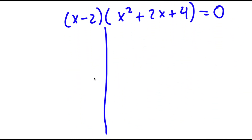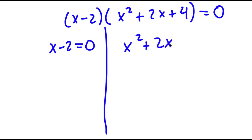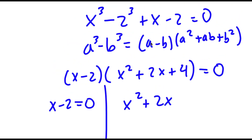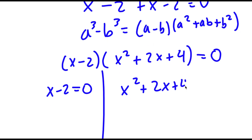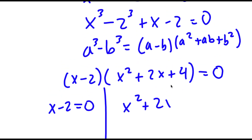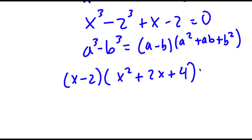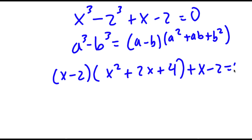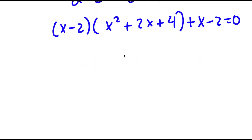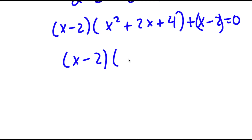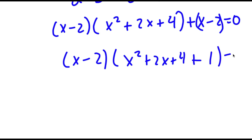Now, this gives me two equations. But remember, we also have the plus x minus 2 term equal to 0. So if I factor out x minus 2, I get x minus 2 times x squared plus 2x plus 4 plus 1 is equal to 0.